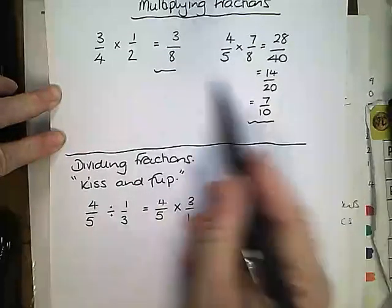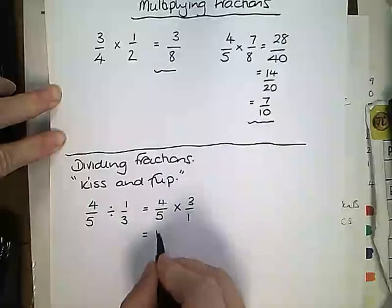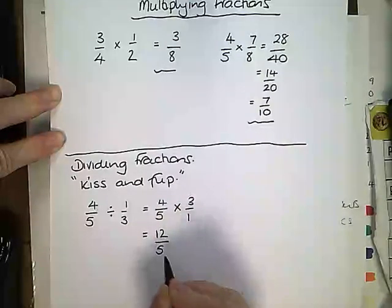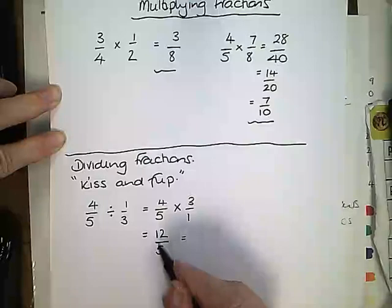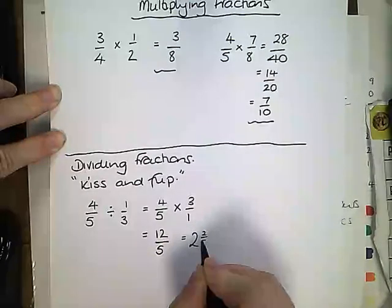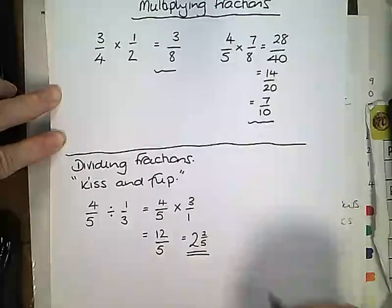And then use our multiplication rule because we have a multiplication here now. So 4 times 3 is 12 and 5 times 1 is 5. Turn this into a mixed number. So 5s into 12 there are 2 with 2 left over so the final answer is 2 and 2 fifths. I will do another example here.